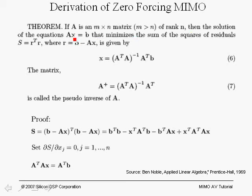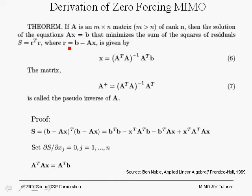The solution to the equation A times vector X equals vector B, that minimizes the sum of the squares of the residuals R-transpose times R — where R is the difference between vector B and AX — is given by: X equals (A-transpose A)-inverse times A-transpose times B. We are assuming A and B are known and we find X such that the sum of squared residuals is minimized.